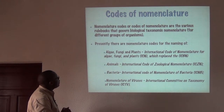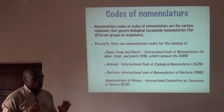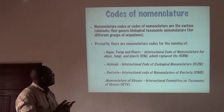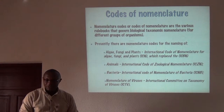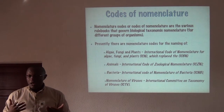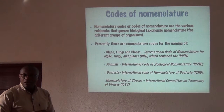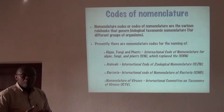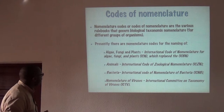Nomenclature codes, or codes of nomenclature, are the various rule books that govern biological taxonomic nomenclature for different groups of organisms. There are several nomenclatural codes which are essentially independent from one another, though some may share a lot, but the discrepancies may also be extreme between each of them.